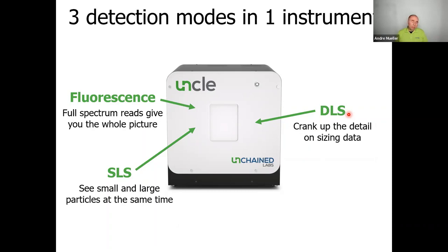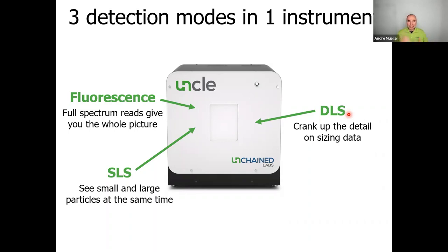The diameter for an AAV would be around 30 nanometers, so if you see something much larger at the beginning, it may be a good idea to re-prep or investigate why aggregation has already occurred. UNCLE also has temperature control — you can set the temperature between 15 and 95 degrees Celsius and ramp or keep it steady, making UNCLE ready for both isothermal and ramping experiments.